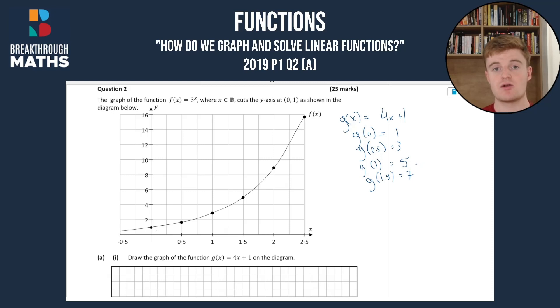So g(2) is going to be 9, and g(2.5) is going to be 11.